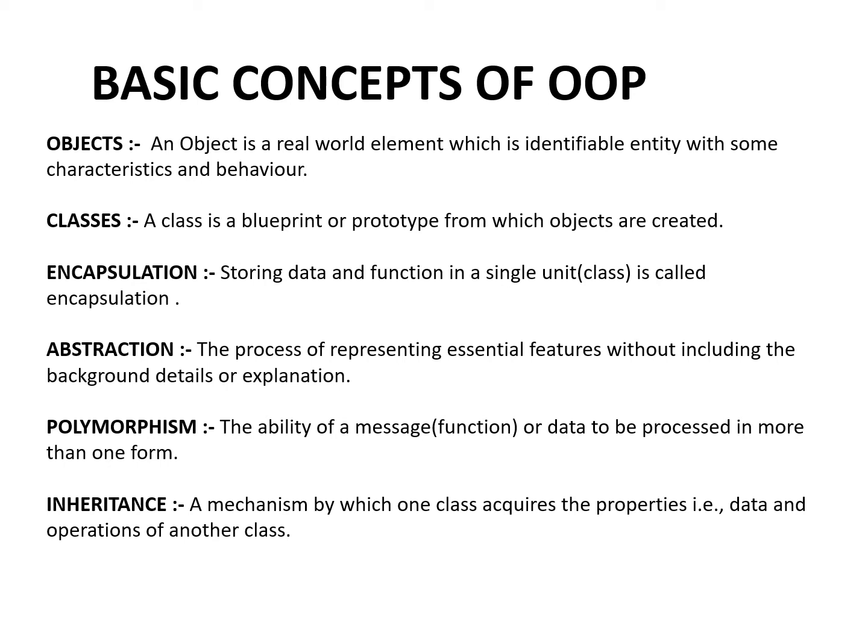Object-oriented programming is for creating real-world entities. Objects are used to represent things like a person, place, or table. Each object is identified by a unique name, and each object must be a member of a particular class. For example, real-world entities like apple, orange, mango, and banana all belong to a particular class called fruits.